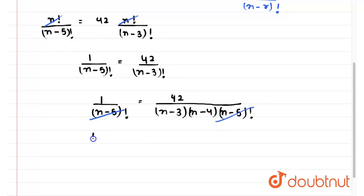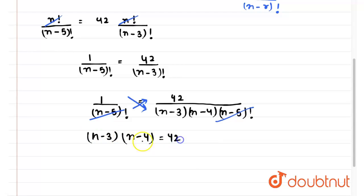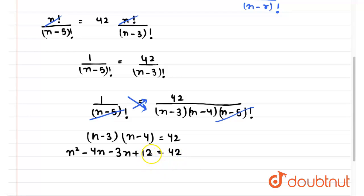If we cross multiply, we get (n minus 3) into (n minus 4) is equal to 42. Expanding this: n squared minus 4n minus 3n plus 12 equals 42. Bringing 42 to the left-hand side, we have n squared minus 7n plus 12 minus 42 equals 0.